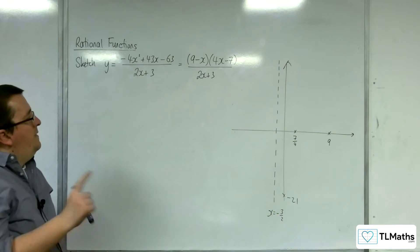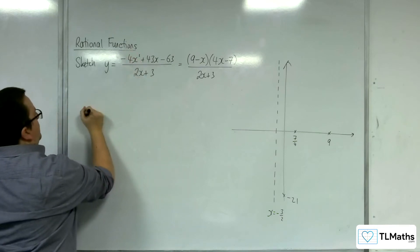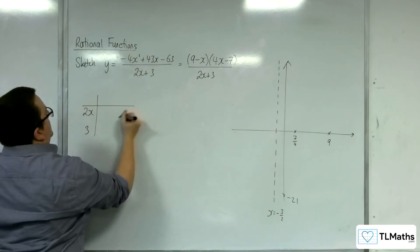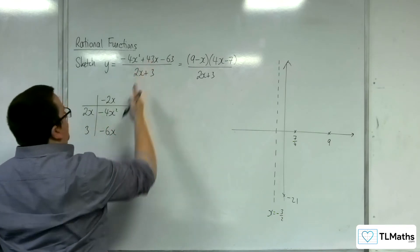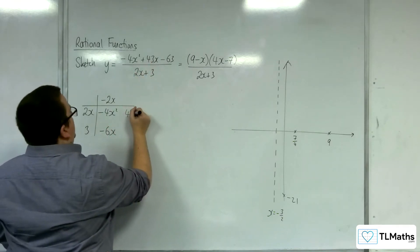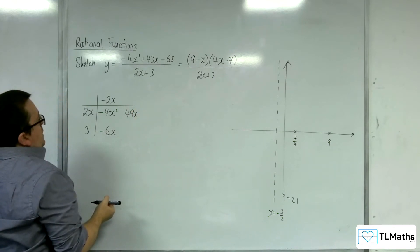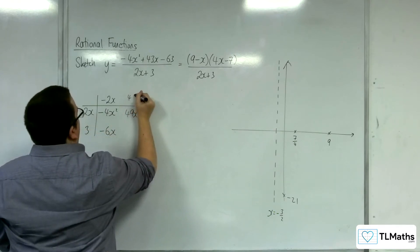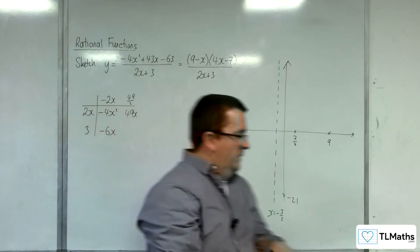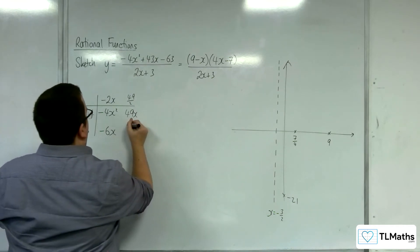Right, OK. Now the oblique asymptotes. OK, so I'm going to divide numerator by denominator. So 2x plus 3, and minus 4x squared. So that's going to be minus 2x. So we're going to have minus 6x. We need 43x, so I'm going to have to have 49x there. OK, so 2x into 49x goes 49 halves. Right, 49 halves times by 3, so 147 halves.